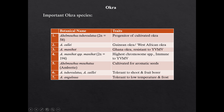Abelmoschus caillei is known as Guinea or West African Okra. Abelmoschus manihot is known as Ghana Okra and is resistant to Yellow Vein Mosaic Virus. Abelmoschus manihot var. manihot is the highest chromosome number species of Okra and is immune to Yellow Vein Mosaic Virus. Abelmoschus moschatus, also known as Ambrette, is cultivated for aromatic seed purpose. Abelmoschus tuberculatus and Abelmoschus caillei are tolerant to shoot and fruit borer. Abelmoschus angulosus is a species tolerant to low temperature and frost.